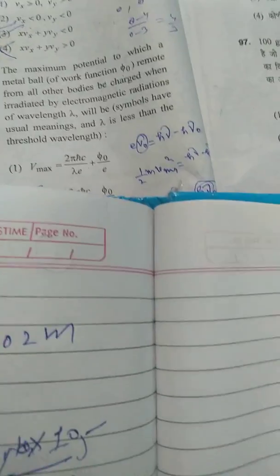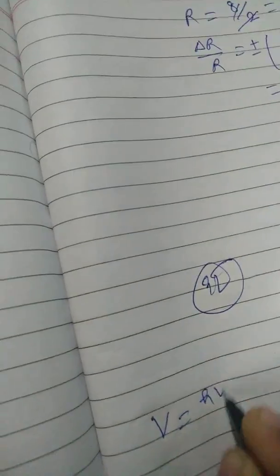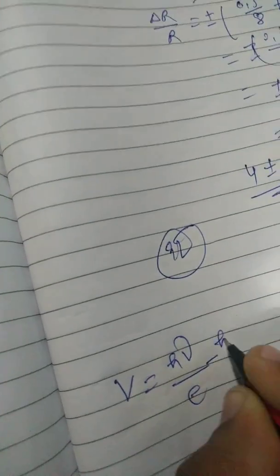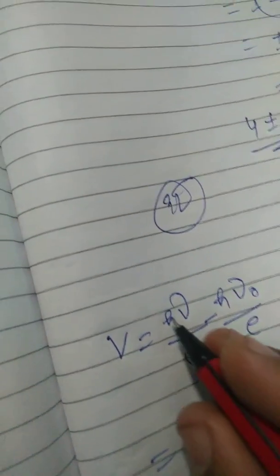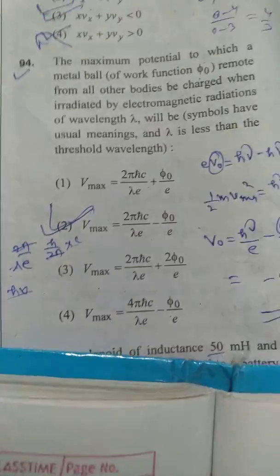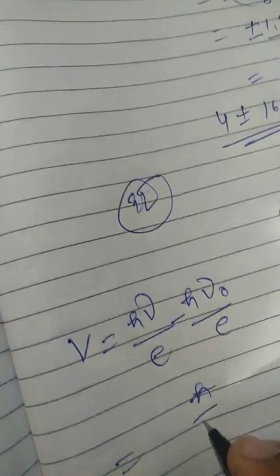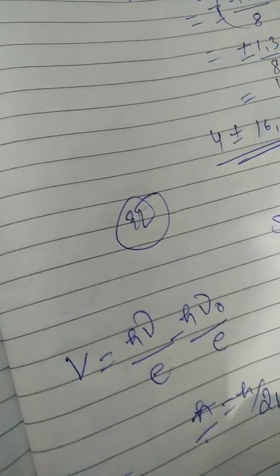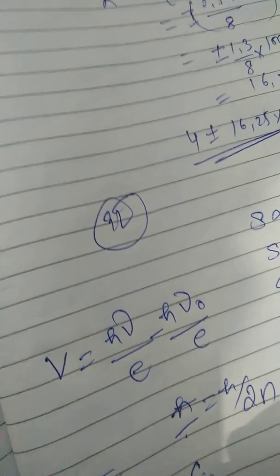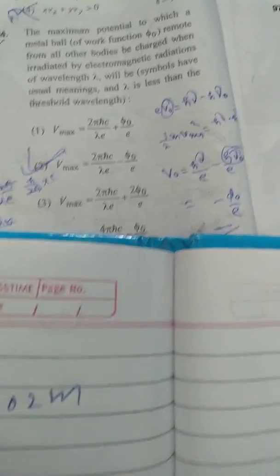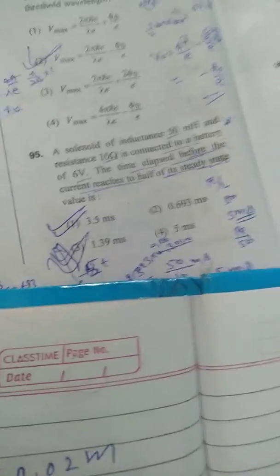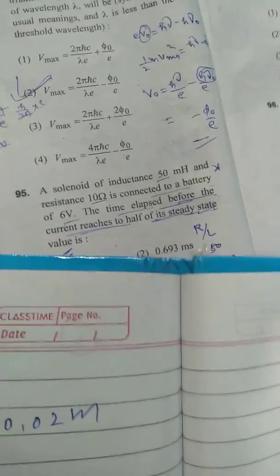Question 94: Stopping potential is given by V = hν/e minus hν₀/e, where hν₀ equals φ₀. Here h-bar has the value h upon 2π, and using c/λ = ν, the correct option is option number 2.